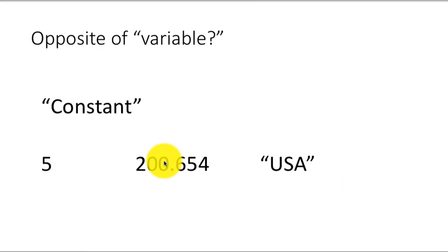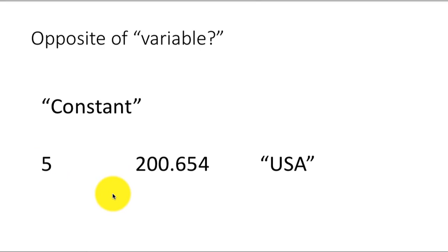Sometimes we will call these as literals. Literals in the sense that they literally mean what they say, whereas a variable is not a literal. So for example, if you have the variable x, it doesn't literally mean x. It means whatever value x contains. So if x contains 5, when you say x, you are really referring to 5. So it doesn't literally mean what you see, whereas for a constant, what you see is literally what it is.